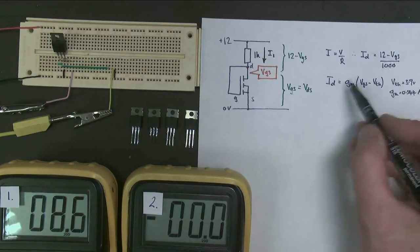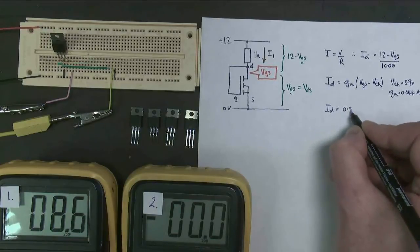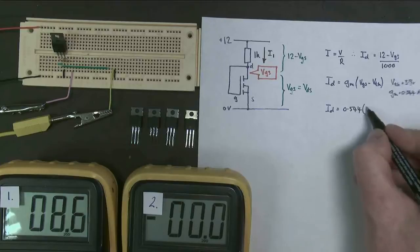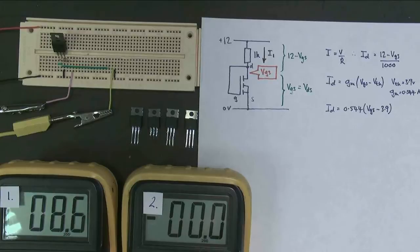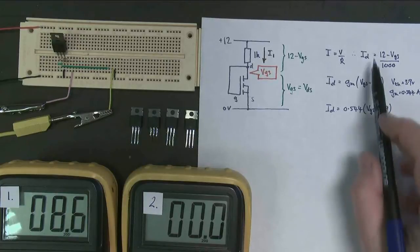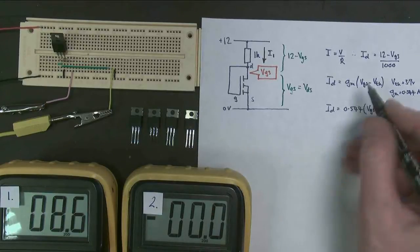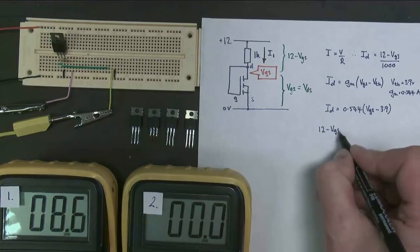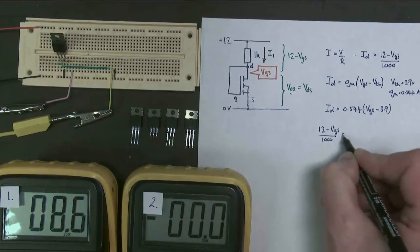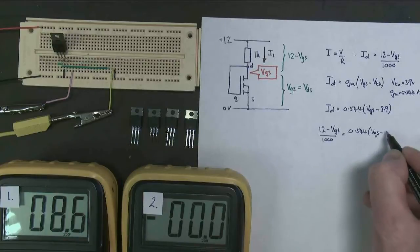Now these are a pair of simultaneous equations, so I'm just going to write this one out again. ID equals 0.544 VGS, which we don't know what it is, minus 3.9. So we should be able to work out what ID is because we've got simultaneous equations: ID, VGS, ID, VGS. I'm going to work out VGS first because it makes it easier. So I'm going to put this one equal to this one, so 12 minus VGS over 1,000 equals 0.544 VGS minus 3.9.